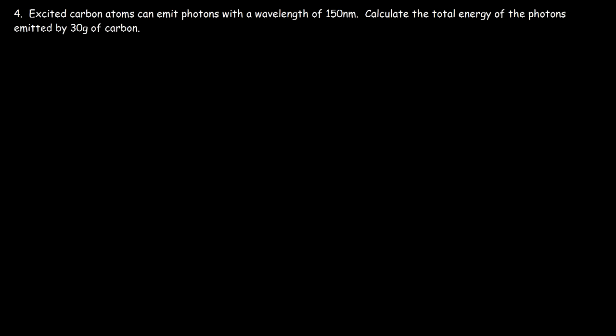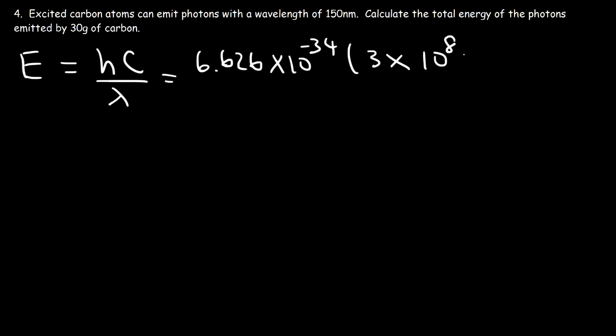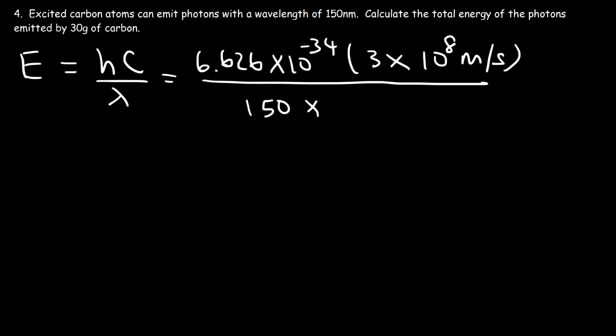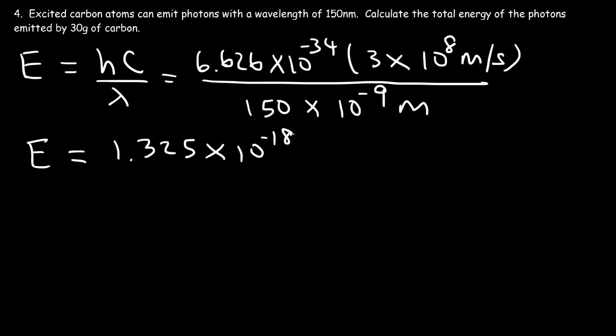Problem 4 builds on the previous one. Excited carbon atoms emit photons with a wavelength of 150 nanometers. Calculate the total energy emitted by 30 grams of carbon. We start by finding the energy per photon using hc divided by lambda. The wavelength is 150 nanometers, which equals 150 times 10 to the negative 9 meters. The energy per photon is 1.325 times 10 to the negative 18 joules per photon.